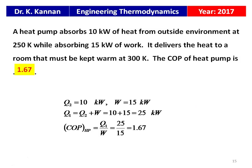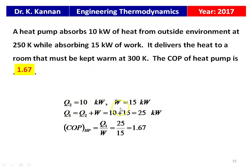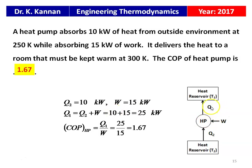From the 2017 question paper: a heat pump absorbs 10 kW of heat from outside environment at 250 K while absorbing 15 kW of work, and delivers heat to a room maintained at 300 K. Given: Q2 = 10 kW, W = 15 kW. Q1 = Q2 + W = 10 + 15 = 25 kW. COP of heat pump = Q1 / W = 25 / 15 = 1.67. The answer is 1.67.